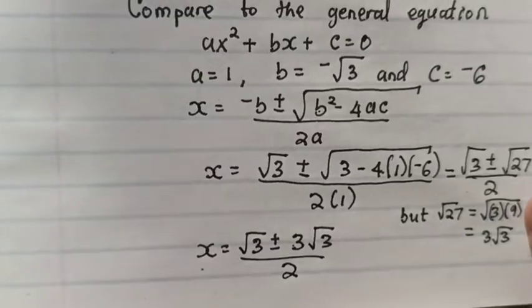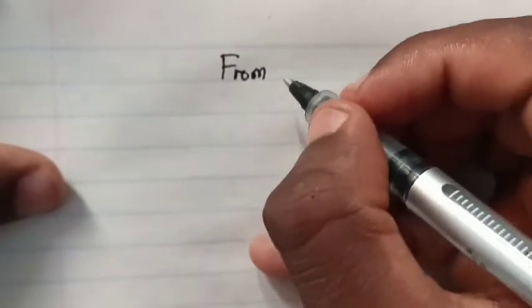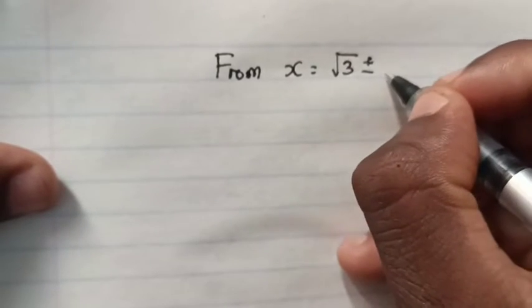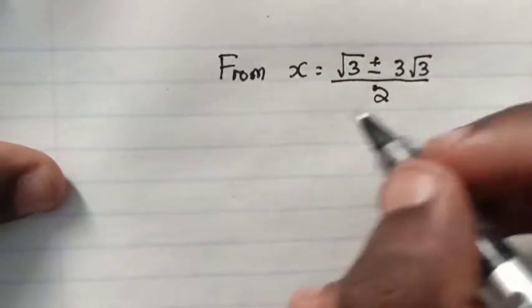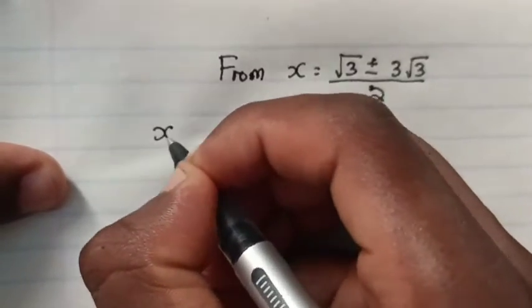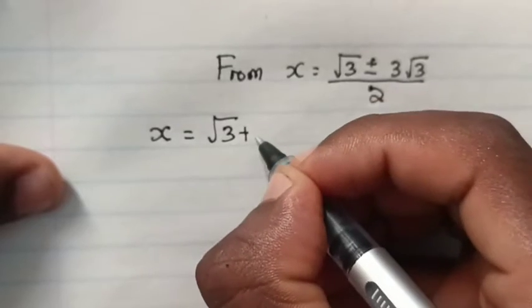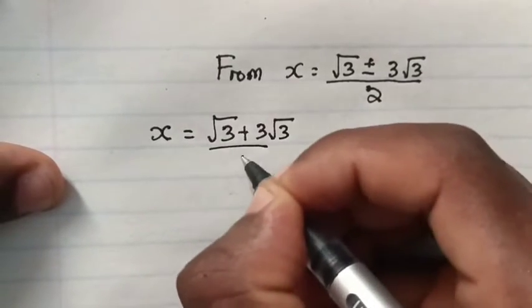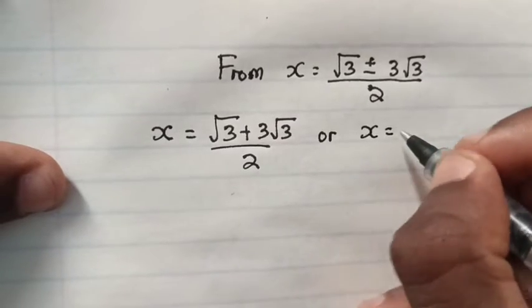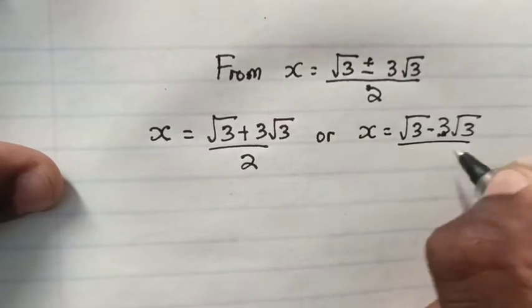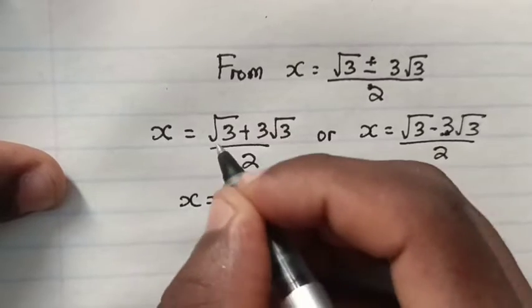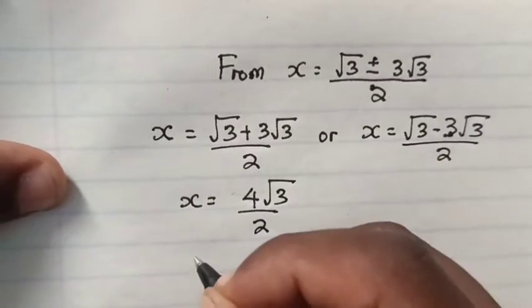Let's continue on the next page. From the previous equation, x equals √3 plus or minus 3√3, all divided by 2. So x equals (√3 plus 3√3) all divided by 2, or x equals (√3 minus 3√3) all divided by 2.